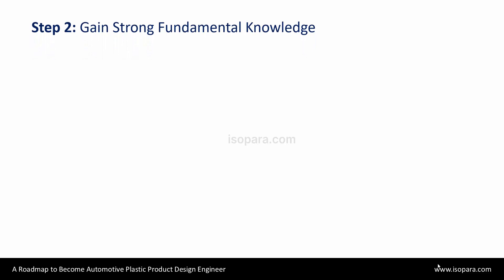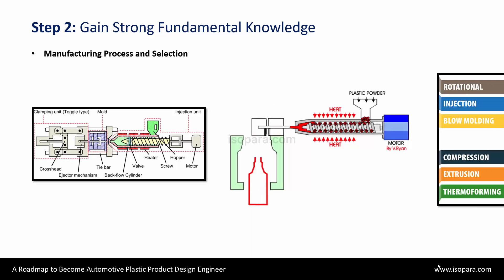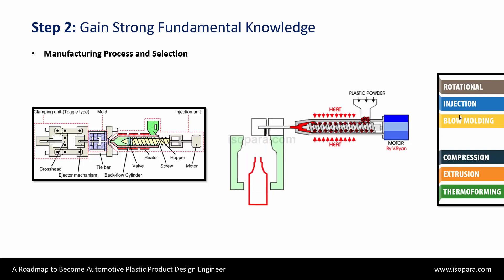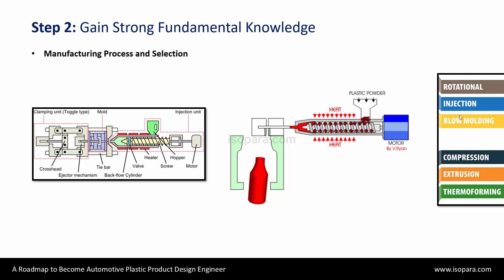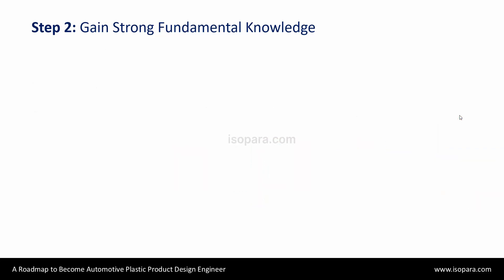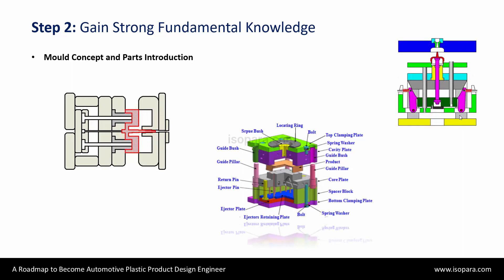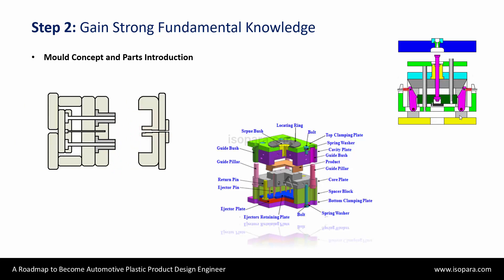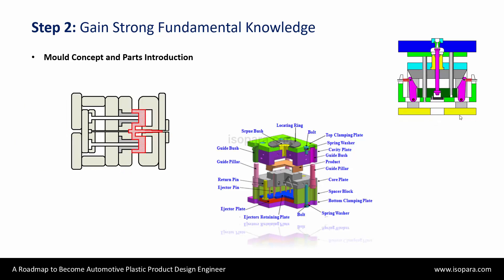In step two, you have to learn about the manufacturing process and its selection. You should be aware of how a bottle is manufactured, by which manufacturing process the CAD dashboard is getting manufactured, how other plastic parts and consumer goods parts are made, and why that manufacturing process is used. Because some critical and complex shapes can't be manufactured with injection molding — they have to be manufactured through blow molding or rotational molding. You should understand how the mold concepts work and how the parts are ejected out from the mold. If you design something without this knowledge, it might not be manufacturable and there is no use in designing such parts.